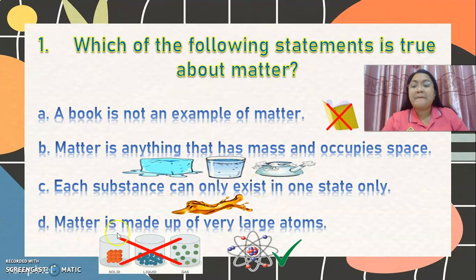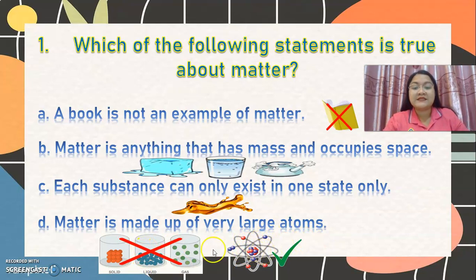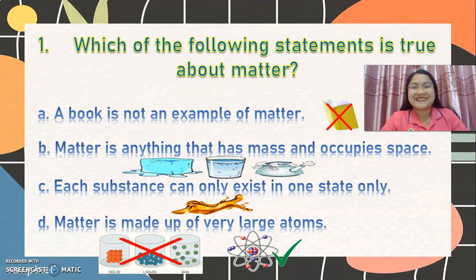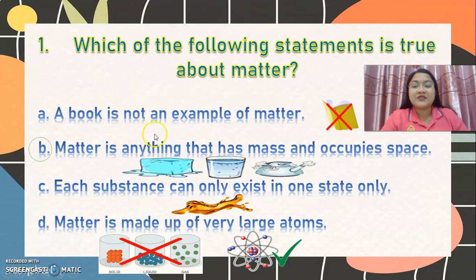Letter D, matter is made up of very large atoms — so if we look at a microscope, are we going to see atoms like this? What is your answer? The correct answer is letter B. Matter is anything that has mass and occupies space. Very good.